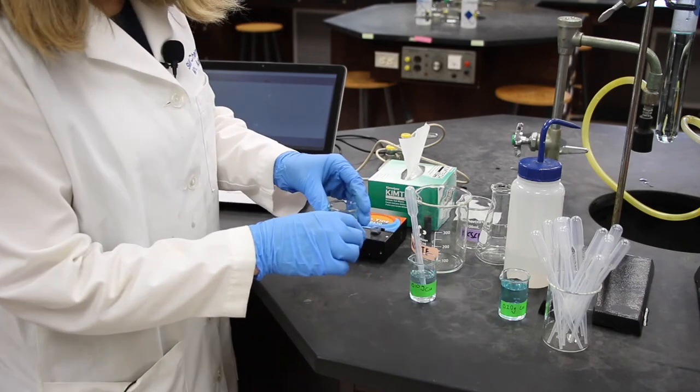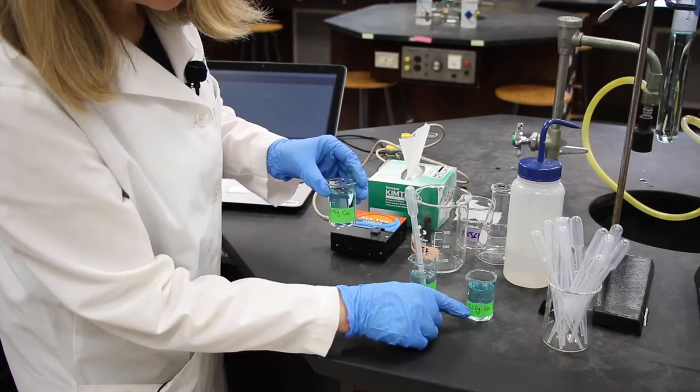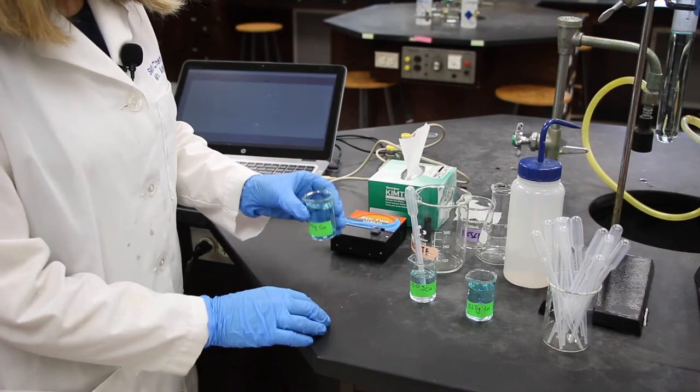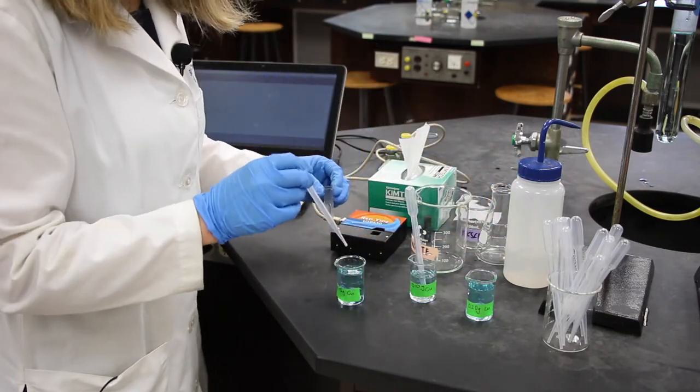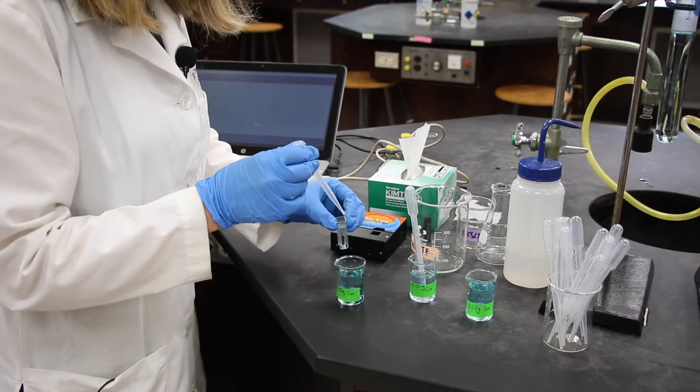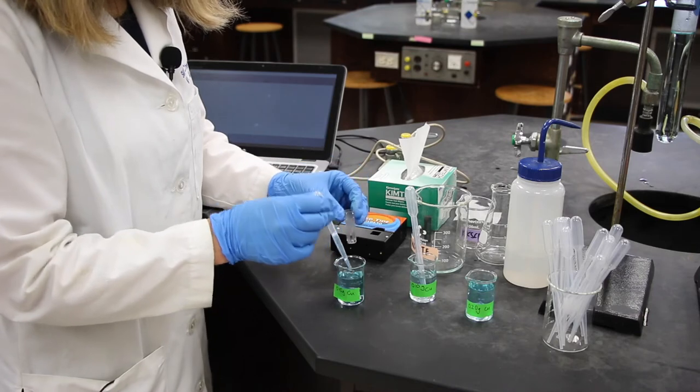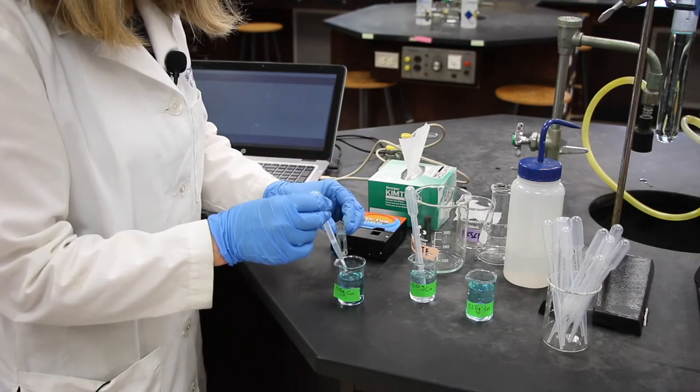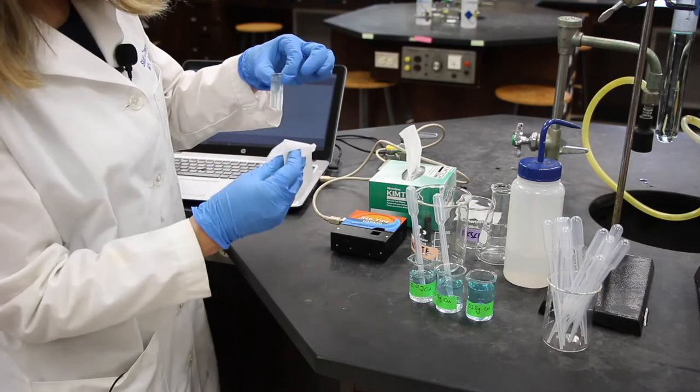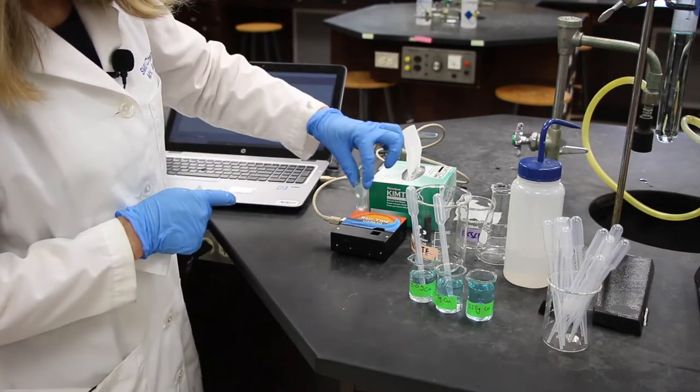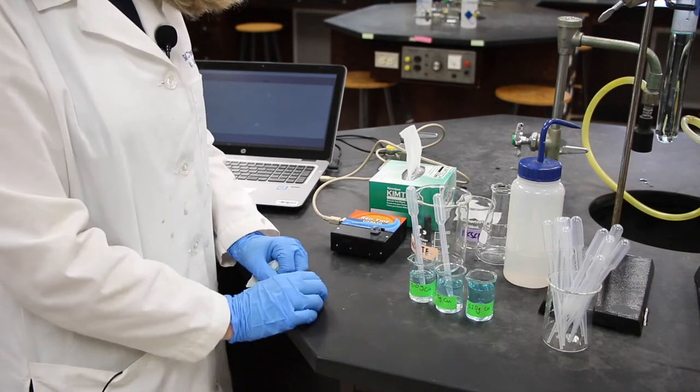Now we'll repeat this for the remaining two solutions. 0.15 grams of copper per 50 milliliters of solution. And 0.20 grams of copper per 50 milliliters of solution. We'll get rid of what was in there previously. Get a new pipette. Because you don't want to use the one that was used for the last solution. Fill it up to normalize it. And fill it up again. Again, take the Kim wipe. Wipe everything off. Hold by the top. The little diamond in the front goes toward the light source. And let's read this reading. And we'll also do the next one.